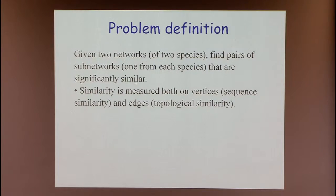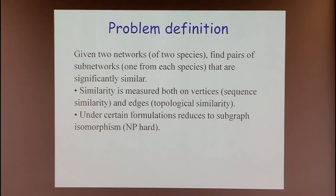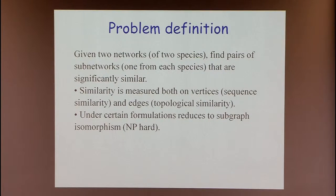The similarity is measured in terms of both node similarity — so the sequences — and edge similarity, which corresponds to the actual interactions observed. This problem, under certain formulations such as looking for a small sub-network within a large network, has NP-complete or NP-hard translations. So we strive to find algorithms that are either heuristic or fixed-parameter to bypass this complexity.